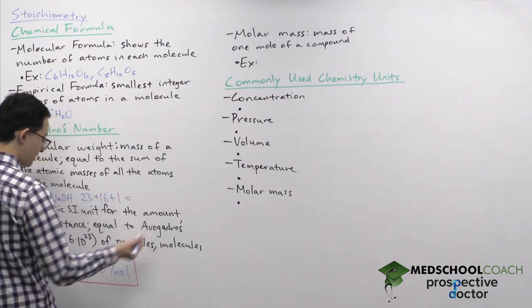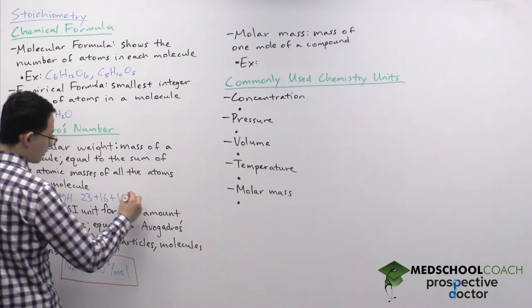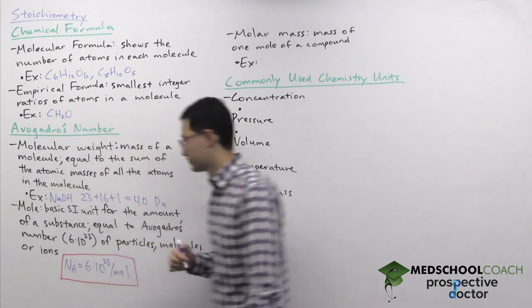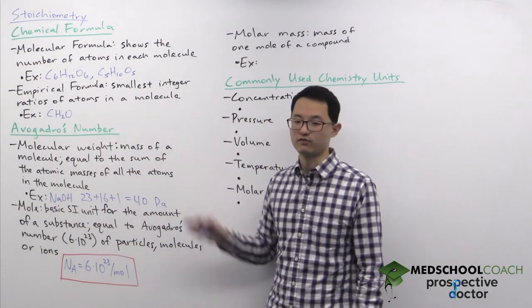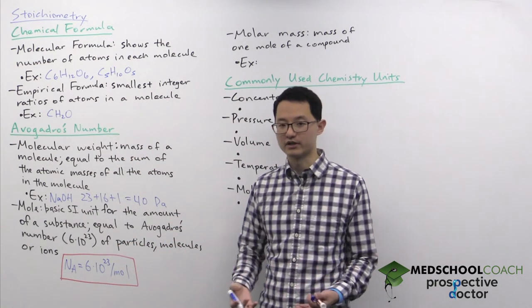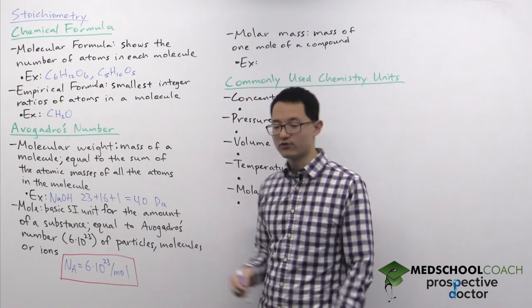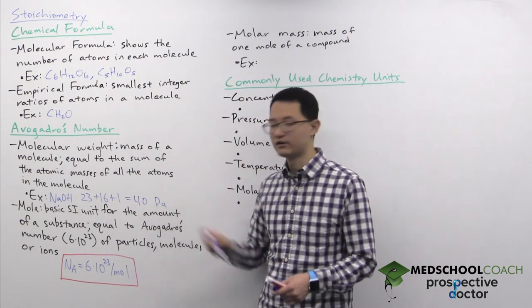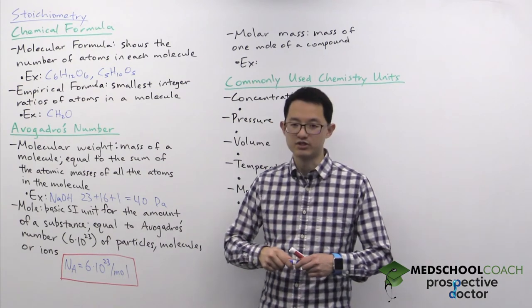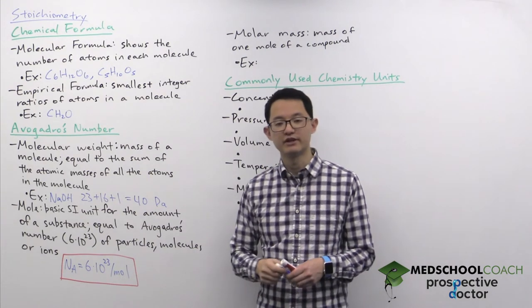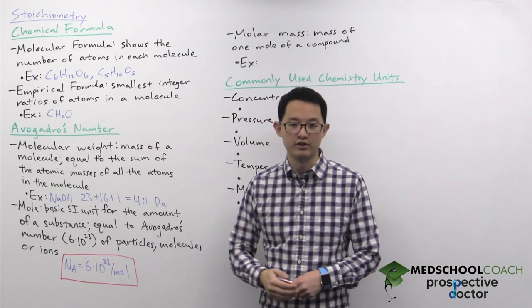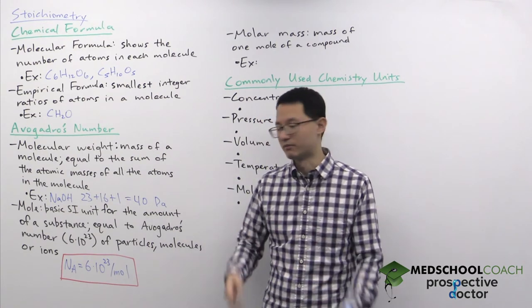Oxygen is 16 and hydrogen is 1. So that means sodium hydroxide has a molecular weight of 40 Daltons. So Daltons are the units that we use for the molecular weight of molecules. Now this is for a single sodium hydroxide molecule, 40 Daltons. Usually in chemistry, when we're doing stoichiometry, we're dealing with a lot more than a single molecule. We're dealing with very large numbers of molecules.